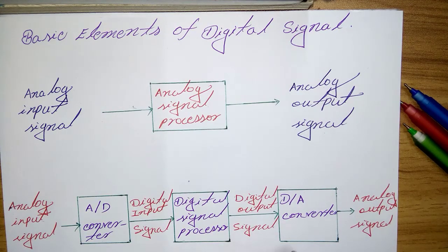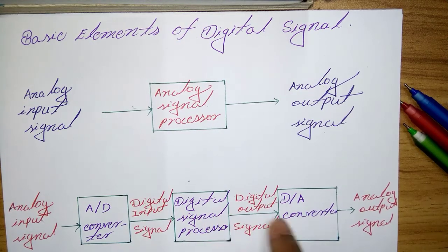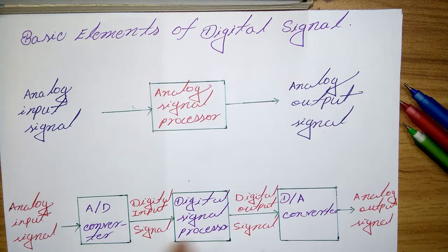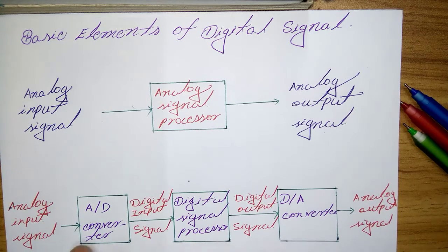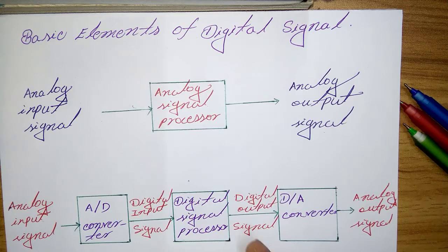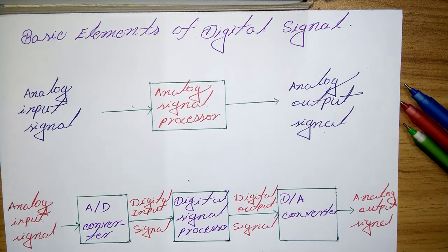Digital signal processing provides an alternative method for processing the analog signal. To perform the processing digitally, there is a need for an interface between the analog signal and the digital signal processor.